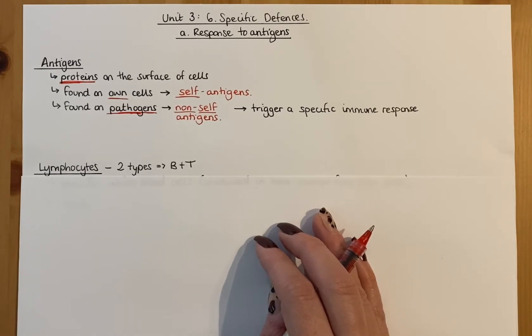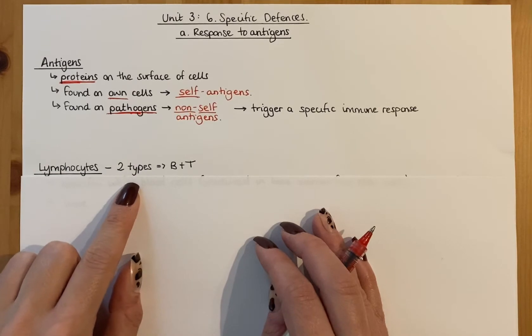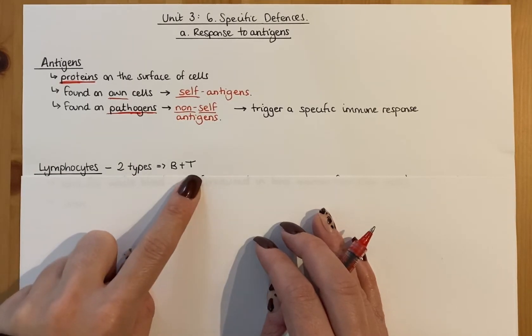Now you might have remembered from National 5 that lymphocytes produce specific antibodies. That's not all they do. That's one specific type of lymphocyte and you'll notice that I've got here there's two. We have B lymphocytes and we have T lymphocytes.